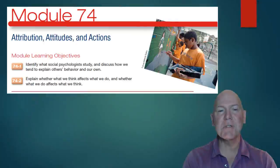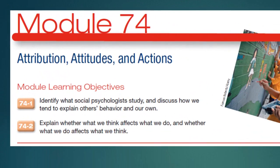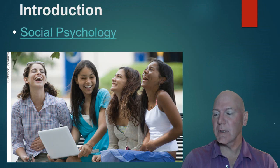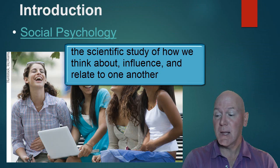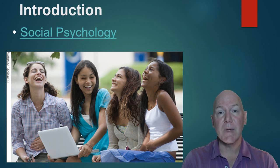We begin our journey into social psychology, starting with attributions, attitudes, and actions. The definition of social psychology is basically the scientific study of how we influence, how we relate to others, and how we think about others.